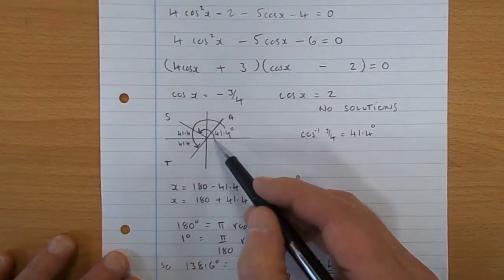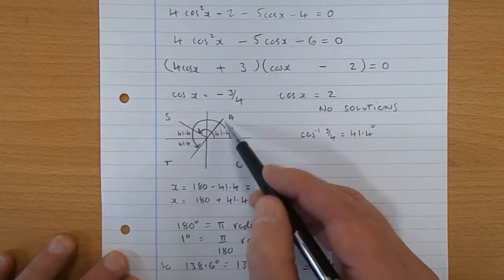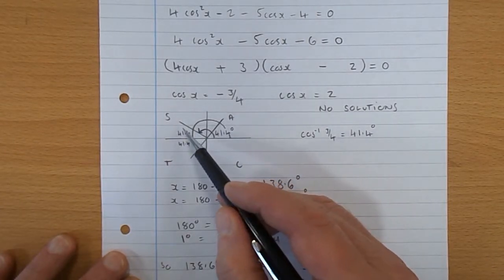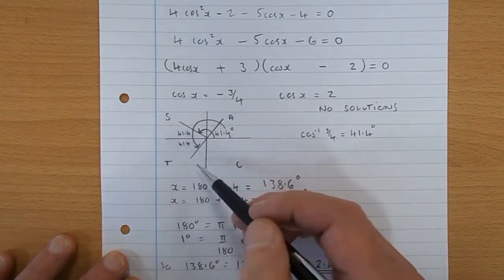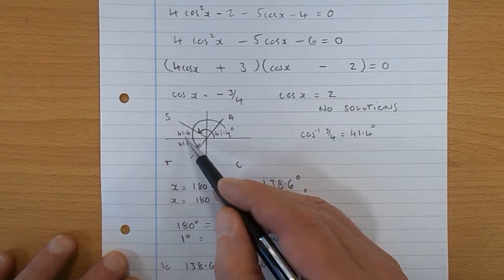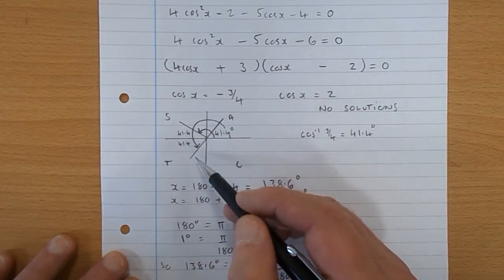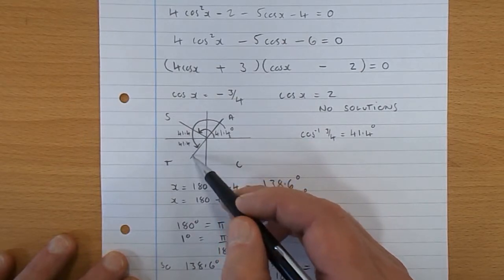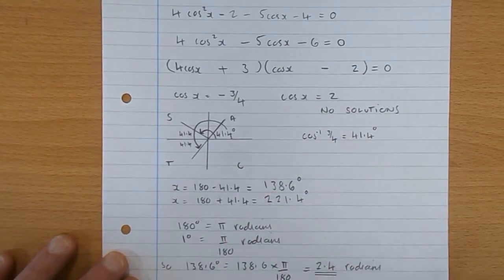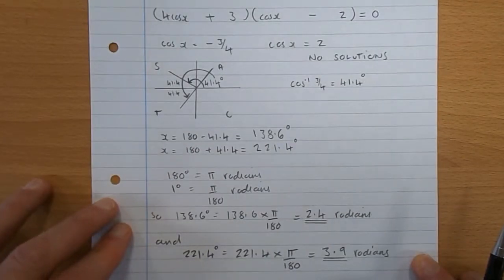First of all do a shift cos of 3 quarters and you get 41.4. And you reflect that line into the two areas where cos is negative. Reflect that over, that's 41.4. So the angle we want is 180 take 41.4, reflect it down 180 plus 41.4. So we have 138.6 and 221.4.